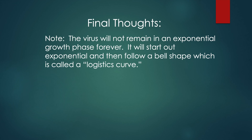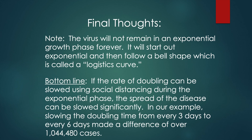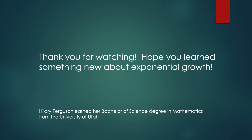My final thoughts: we know the virus will not remain in an exponential growth phase forever. It will start out exponential and then follow a bell shape, which is called a logistics curve. The bottom line is, if the rate of doubling can be slowed using social distancing during the exponential phase, the spread of the disease can be slowed significantly. In our example, slowing the doubling time from every 3 days to every 6 days made a difference of over 1,044,480 cases. Thank you for watching — I hope you learned something new about exponential growth, and now you can solve the penny problem and impress your friends.